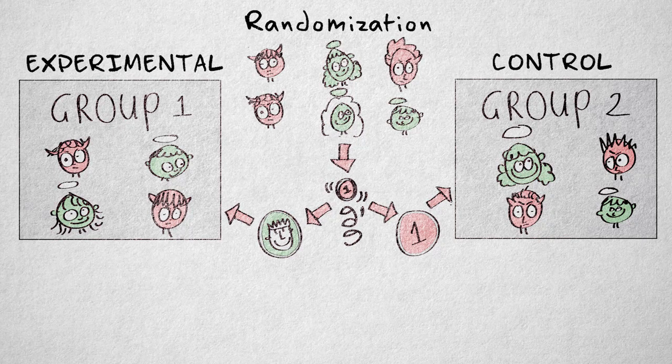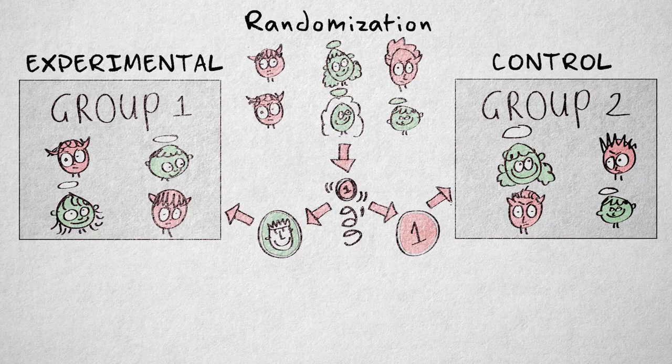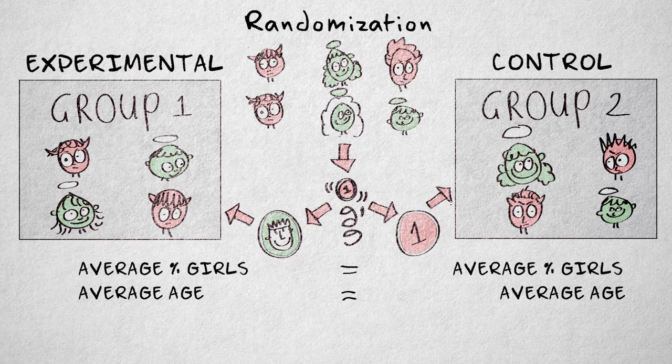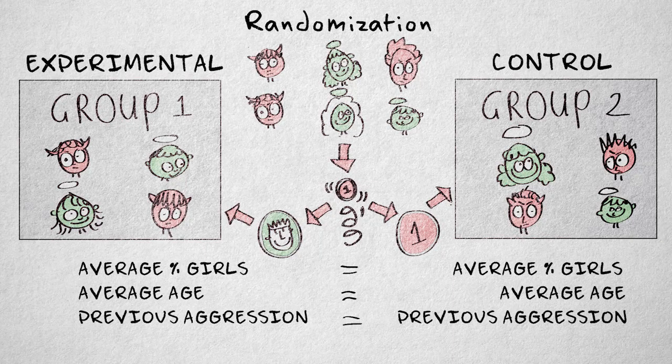On average, this process will ensure an equal distribution over the two groups in terms of gender, but also in terms of age, previous aggression, hair color, shoe size, and so on.